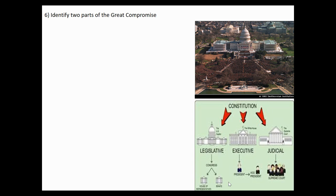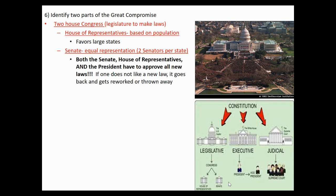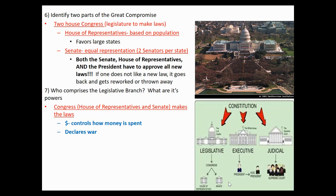The solution was the Great Compromise: a two-house Congress. The Capitol building has two wings — one is the Senate, one is the House of Representatives. The House of Representatives is based on population, favoring larger states. The Senate is equal representation — two senators per state — which is basically the New Jersey Plan. Both the Senate, the House, and the president all have to approve new laws. The powers delegated to this legislative branch include making laws. But the real power Congress has is, number one, money — Congress controls how money is spent. The annual budget is about $9–10 trillion a year, and it's Congress, not the president, that decides how to dole out that money.